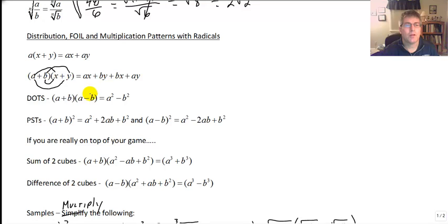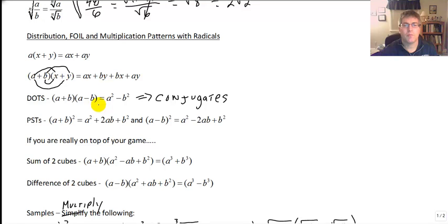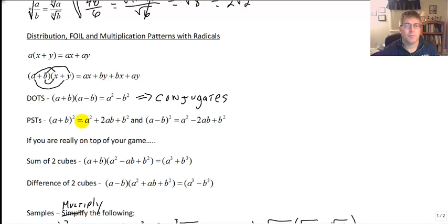Watch out for your patterns when multiplying radicals. We're going to see the difference of two squares pattern quite a bit: A plus B times A minus B equals A squared minus B squared. We're going to call that pattern conjugates — anything that follows this pattern with square roots or imaginary numbers are conjugates. You'll also have your perfect square trinomials: A plus B squared equals A squared plus 2AB plus B squared, and A minus B squared equals A squared minus 2AB plus B squared.